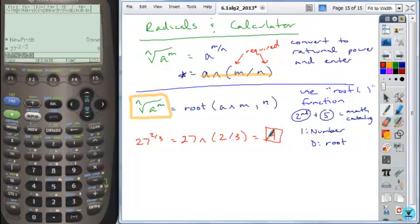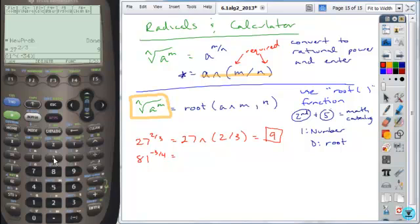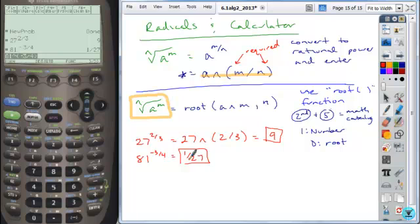And we can do our second problem. The second problem was 81 to the power of negative three-fourths. Again, we take our base to the power of, in our grouping symbols, negative three over four. Again, close your grouping symbols here. Hit enter, and that gives you your answer, one over 27, which again confirms what we got by hand.